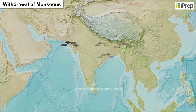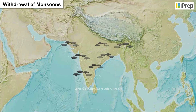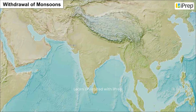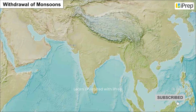By December, it has completely withdrawn from the remaining parts of India. The islands receive the first showers by the end of April or early May, progressively from south to north. The progressive withdrawal from north to south occurs between the last week of December and early January. By this time, the influence of the winter monsoons begins in the country.